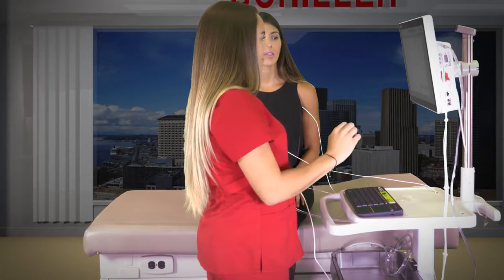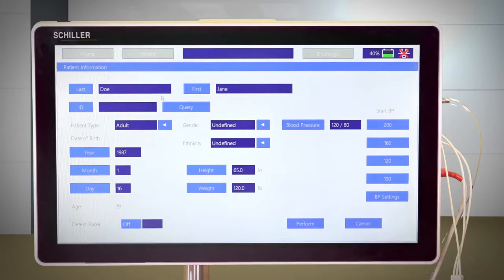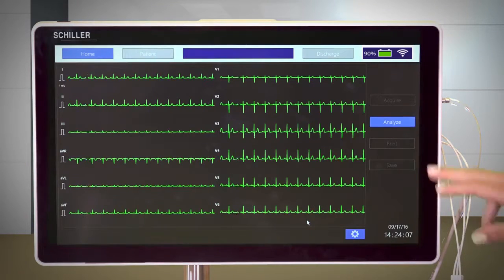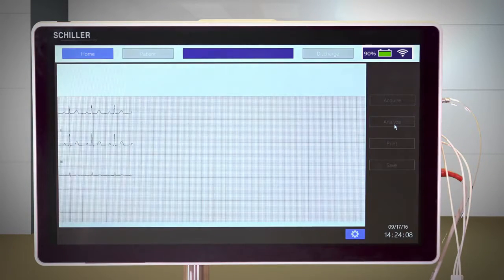Performing a resting ECG is quick and easy when the 10-wire ECG cable is connected. By inputting the patient's information and pressing Analyze, we can obtain a report with the patient information and interpretation.